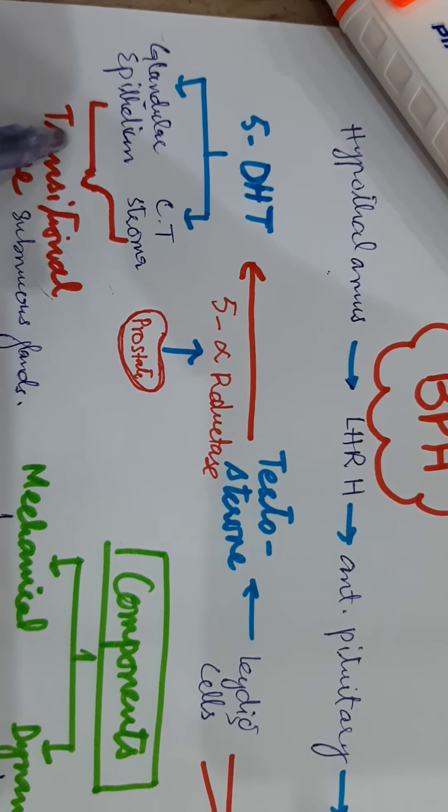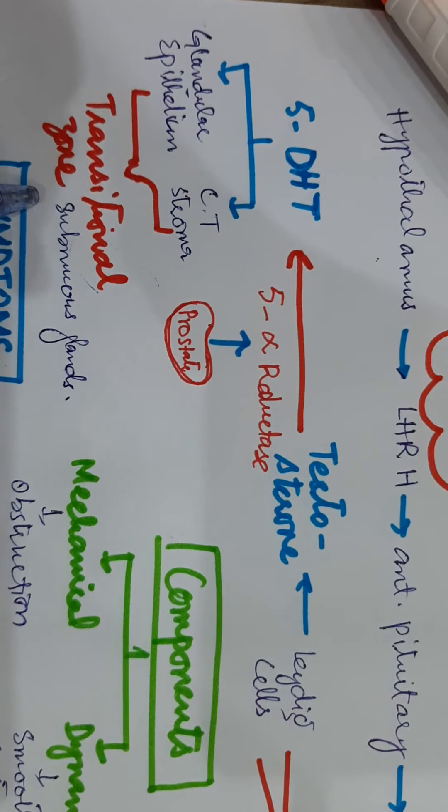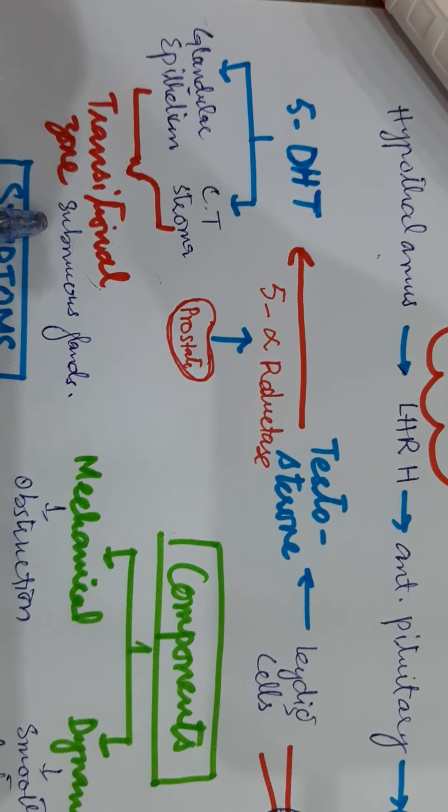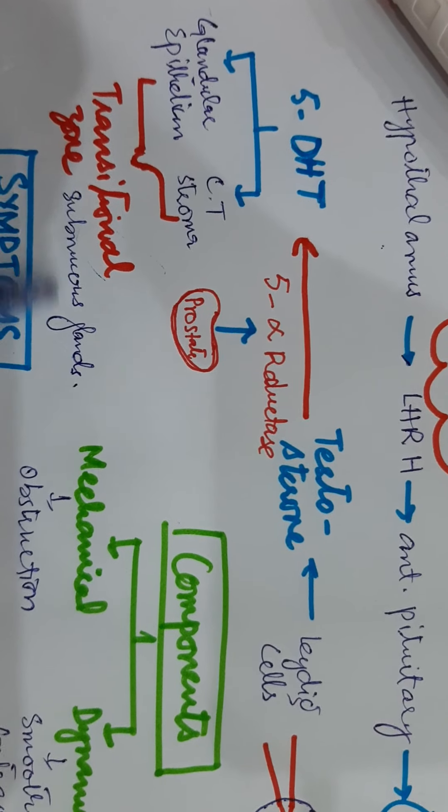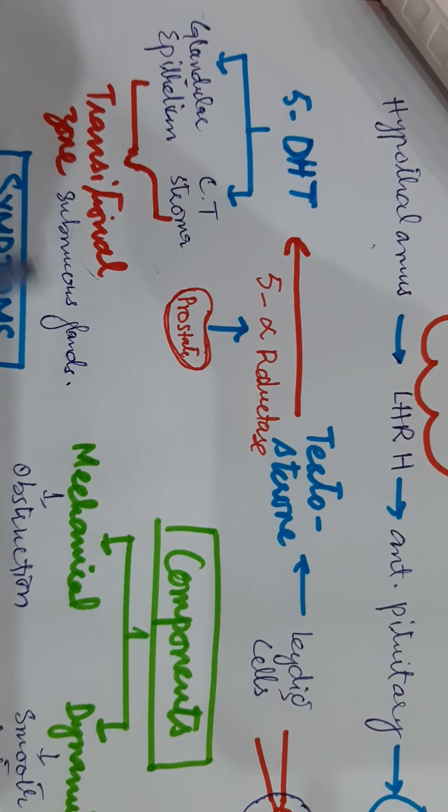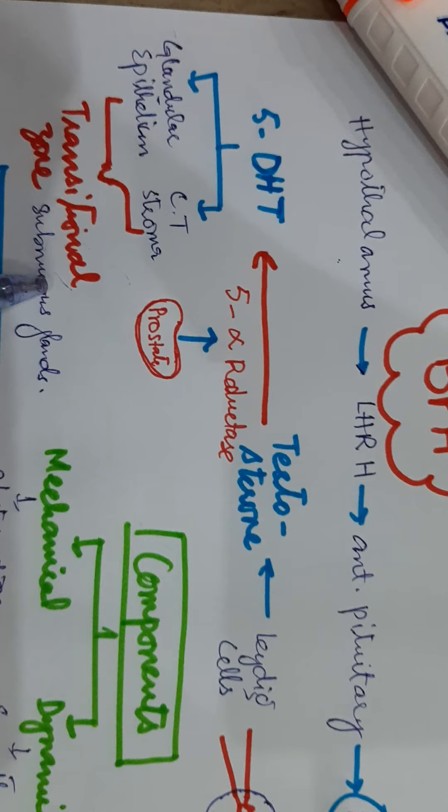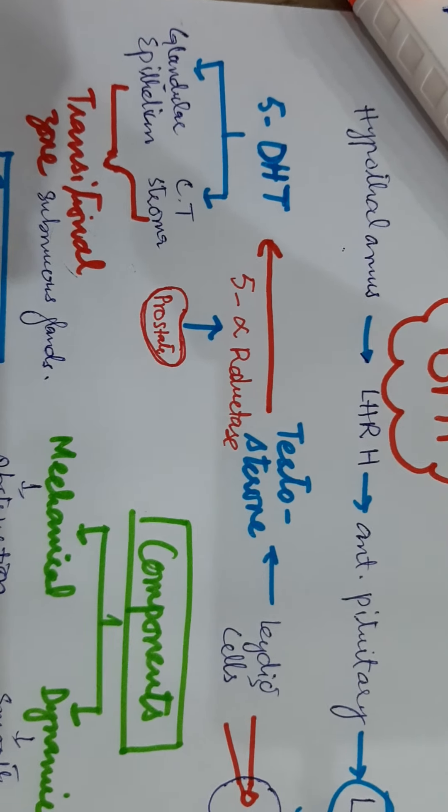It mostly affects the transitional zone of the prostate gland. The transitional zone mucus glands enlarge and form the walls of the loops, which causes enlargement of the prostate gland.